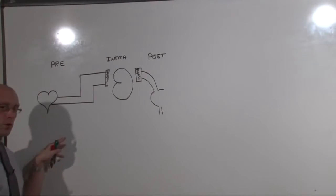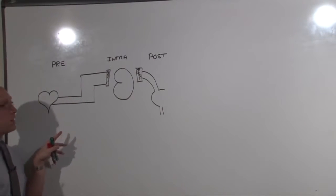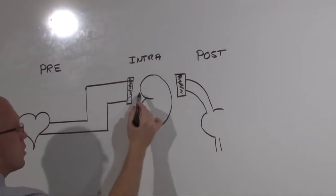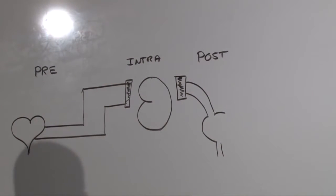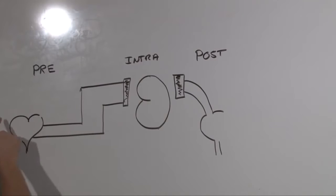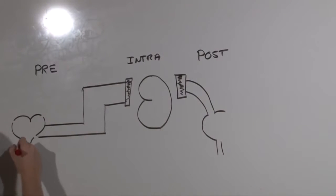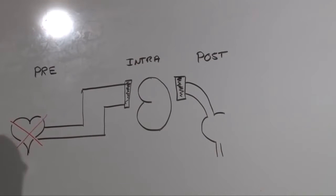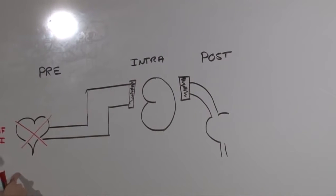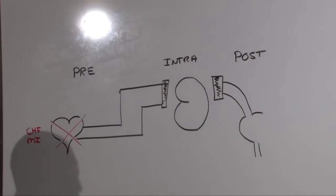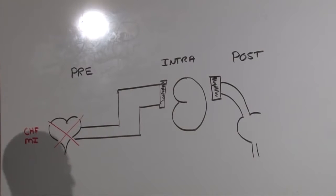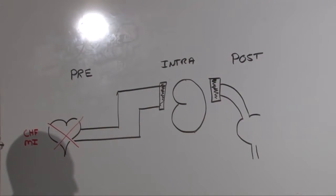Let's start with the differential for pre-renal failure first. That is going to be anything that prevents perfusion to the kidney, so you could see that potentially you could lose the pump. Situations such as congestive heart failure or AMI would lead the pump to break and not enough forward flow to get to the kidney. That would cause decreased perfusion to the kidney.